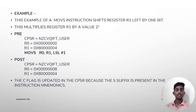Now let us see an example for barrel shifter. This example of a MOVS instruction shifts register R1 left by 1 bit, which multiplies register R1 by a value 2^1. Pre: CPSR=NZCVQIFT_user, R0 and R1. MOVS R0, R1, LSL #1. Post: CPSR=NZCVQIFT_user, R0=0x00000008, R1=0x00000004. The C flag is updated in the CPSR because the S suffix is present in the instruction.